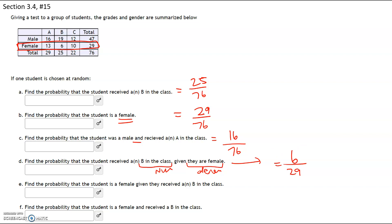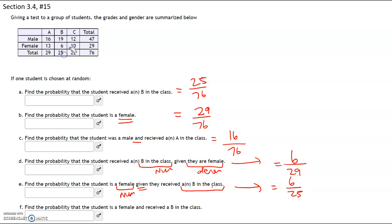Part E: find the probability that the student is female given that they received a B. Now our given changes — it's anybody who received a B in the class. How many students got a B? That's 25 students, and that'll be your denominator. Of those 25, six of them are female, so that would be 6 out of 25. Finally, find the probability that the student is female and received a B — we're looking for the intersection of female and B, which is 6, out of a total of 76.